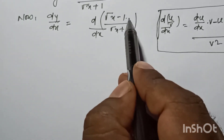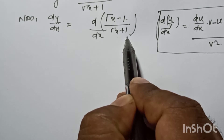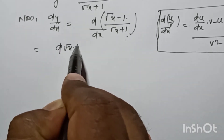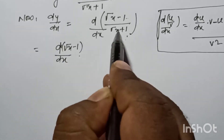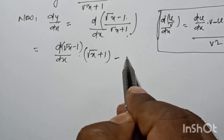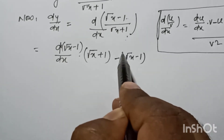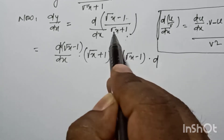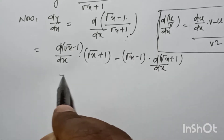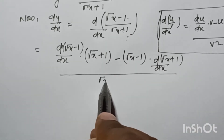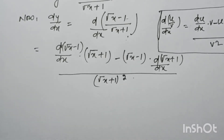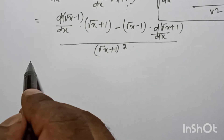This part is u and the other part is v. That is, d of root x minus 1 by dx, into v which is root x plus 1, minus root x minus 1 into d of root x plus 1 by dx, the whole divided by v square, which is root x plus 1 square.